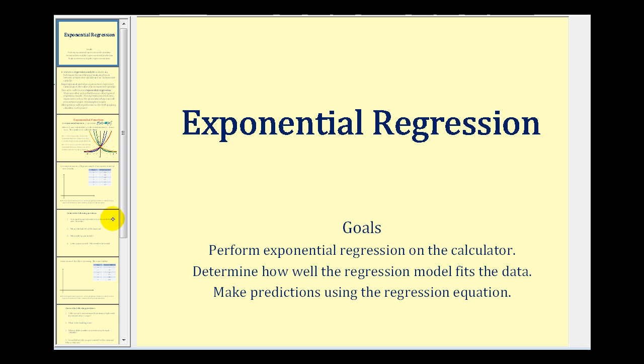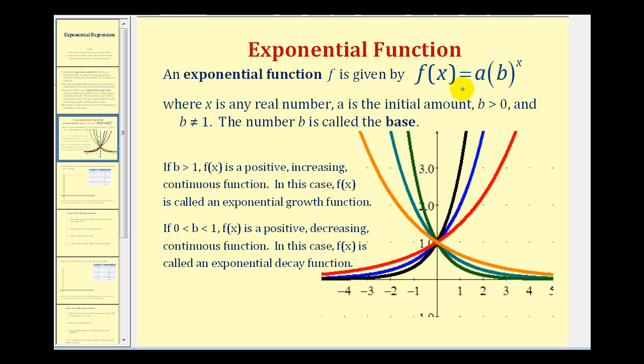Let's start with a quick review of exponential functions. A function in the form of f(x) = a times b raised to the power of x is an exponential function where x can be any real number. A would be the initial amount when x equals zero, and b has to be greater than zero and not equal to one. If b is greater than one, f(x) is a positive increasing continuous function, which would be exponential growth as we see here from these three functions.